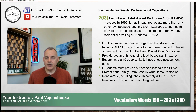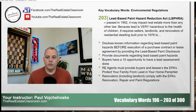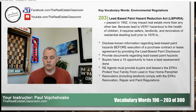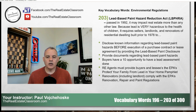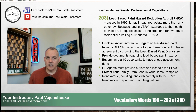Last but not least is renovators — and this includes landlords. If you're a landlord providing rental property, you are considered a renovator if you perform work on your own property. You must comply with the EPA's renovation, repair, and paint regulations — we commonly refer to that as the RRP. Landlords and property managers, you are considered a renovator if you do work on your own property, and therefore you must follow the RRP regulations.